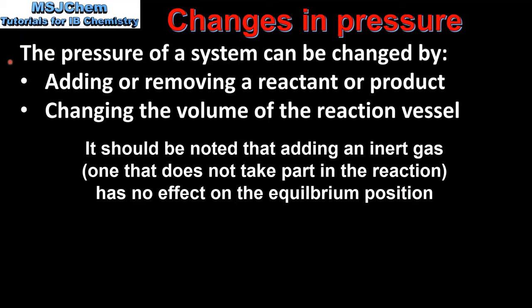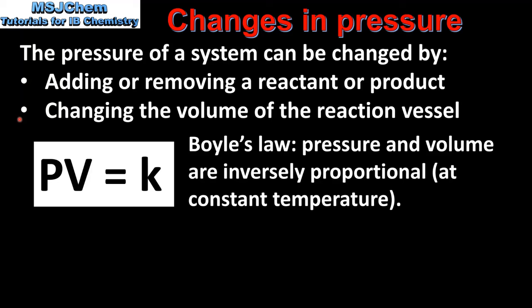In the second part of the video we look at changes in pressure. The pressure of a system can be changed by either adding or removing a reactant or product, or changing the volume of the reaction vessel. The first point has the effect of increasing the concentration of the reactants or products. The second point refers to Boyle's law, which states that pressure and volume are inversely proportional at constant temperature. This can be written in equation form as P times V equals constant K.